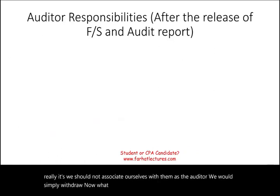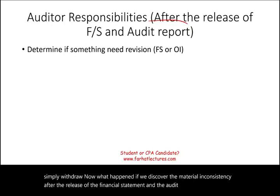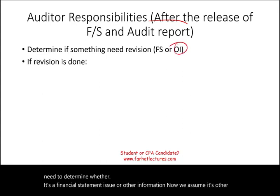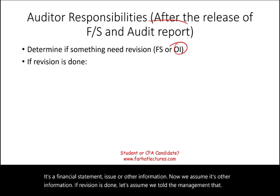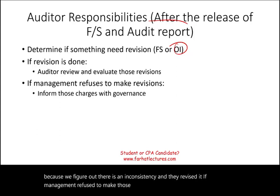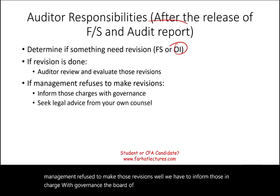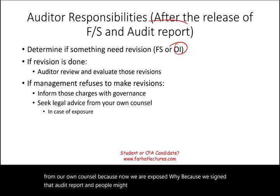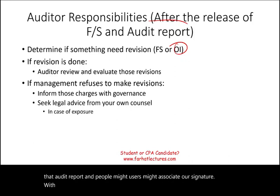What happens if we discover the material inconsistency after the release of the financial statement and audit report? We need to determine whether it's a financial statement issue or other information issue. If revision is done, we still have to review and evaluate those revisions. If management refused to make those revisions, we have to inform those in charge of governance — the board of directors — and seek legal counsel from our own counsel, because we signed that audit report and users might associate our signature with that other information.